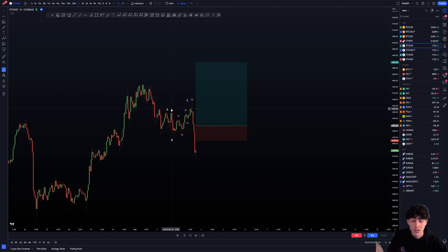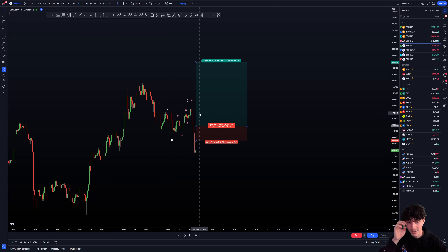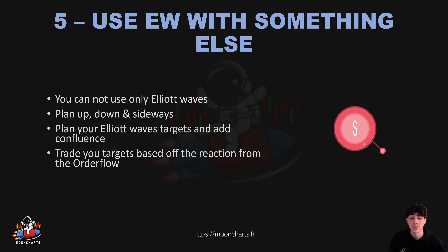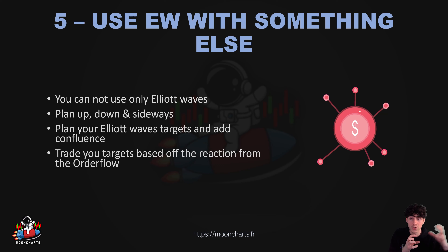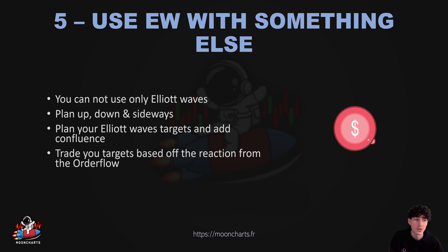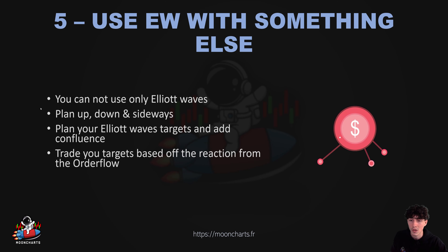Sometimes with Elliott Wave it's really 50-50. You cannot always know what's next. There are some periods where you're going to struggle a bit and you'll have to wait for more data to come. Sometimes you cannot, as a day trader, wait maybe a month to confirm some waves or even two or three days — you have to still trade because you have bills to pay. So you really plan everything up, down, and sideways, and then classify these scenarios by probabilities.